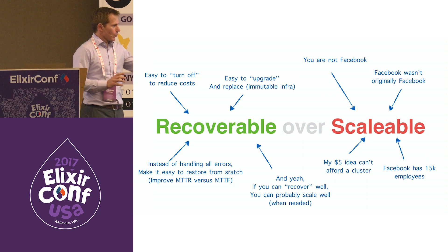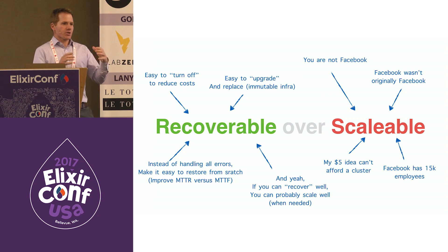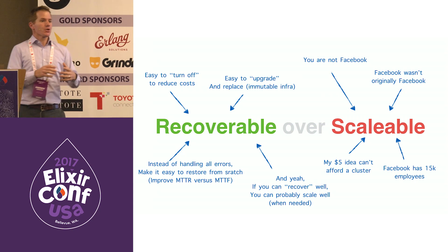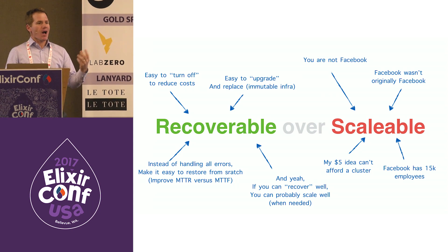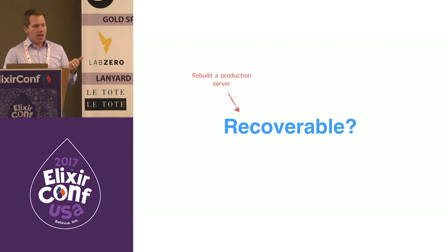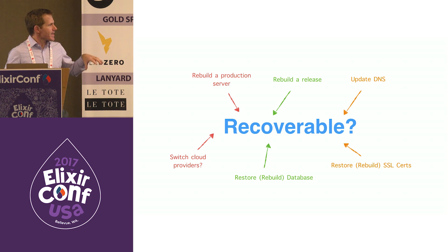There's always the 'not invented here' question: why aren't you using load balancers with all this elastic AWS dynamic provisioning? I'll build one server, create an AMI, and get AWS to manage spinning up 10 when traffic spikes. The work we did wasn't negated. To recover well means being able to rebuild a production server, rebuild a release, update DNS, restore SSL certs, save the database, and possibly change cloud providers.